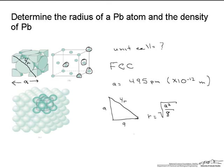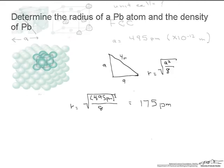So this is going to equal the square root of 495 picometers squared, divided by 8, or 175 picometers. So that's the radius of a lead atom.